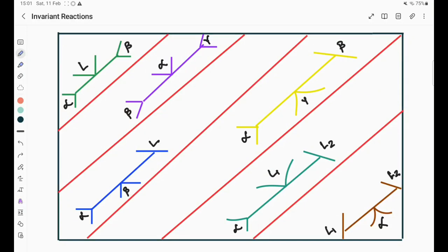Hello guys, welcome to our YouTube channel. Today we will see the different invariant reactions in phase diagrams. The first reaction is liquid gives alpha plus beta, which is eutectic.